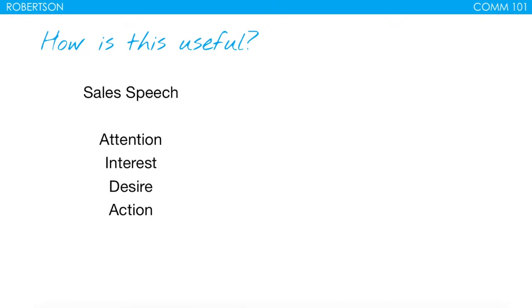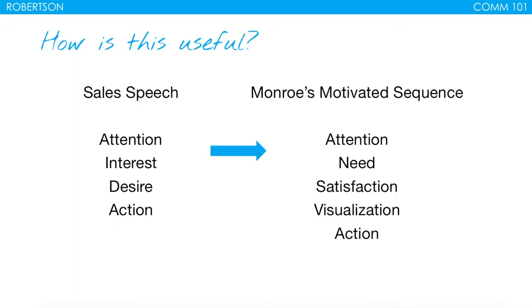The initial format for a sales speech was to gain attention, create interest, create a desire from your audience, and then get them to take action. Monroe converted this into what he named Monroe's Motivated Sequence: first gain their attention, then establish a need or a problem, after that satisfy that need, then create a visualization — get them to imagine themselves after the problem has been solved — and finally, just like the sales speech, get them to take some sort of action.